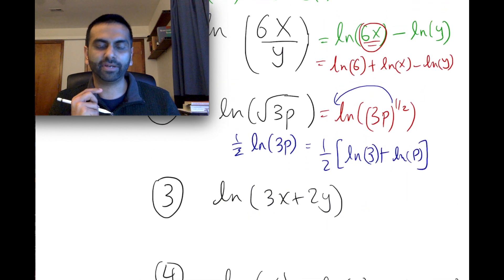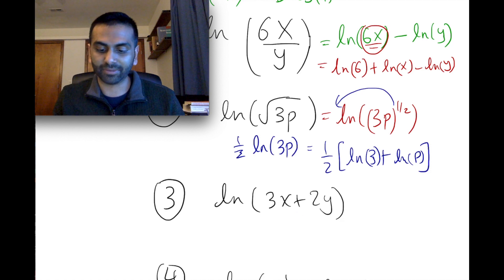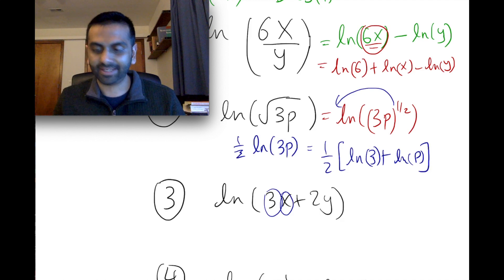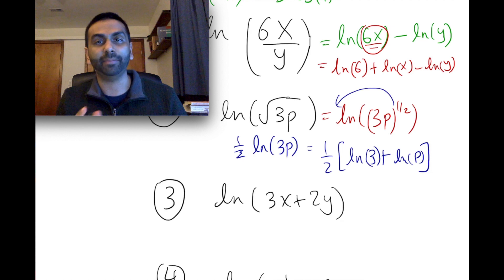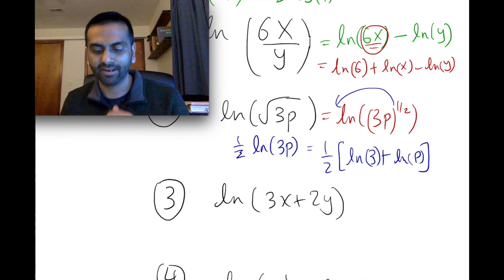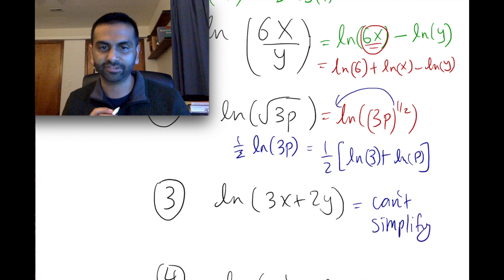What about this next problem? There's addition on the inside, so even though it's tempting to say that's ln of 3 plus ln of x, you can't do that because there's not a 3 multiplied to the entire inside — it's just part of the inside. This addition means none of our rules apply, because this is not in the form of a times b as the main operation on the inside. You have two terms added, so literally you just can't simplify any further.